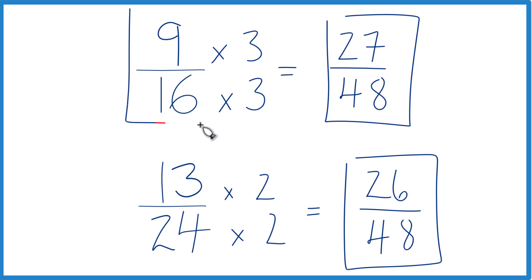That means that 9-16ths, that's going to be larger than 13-24ths. And again, not by a lot, but it's still the greater fraction. So that's it. This is Dr. B. 9-16ths is greater than 13-24ths. Thanks for watching.